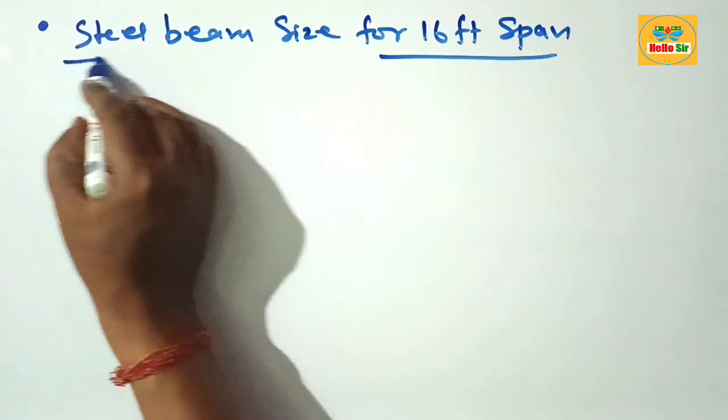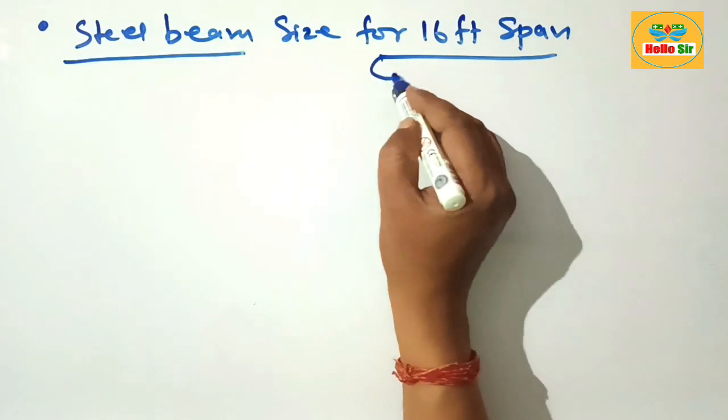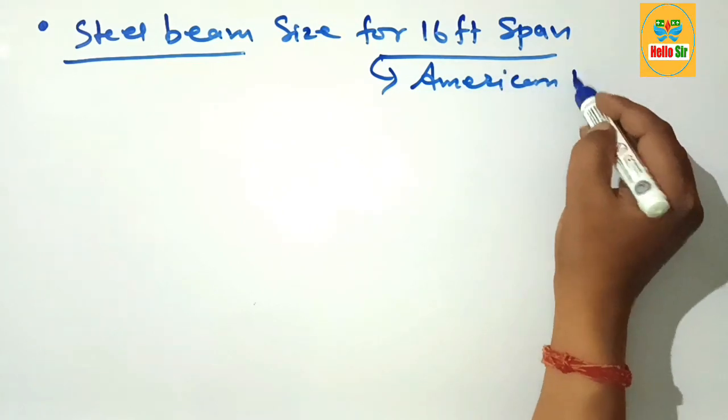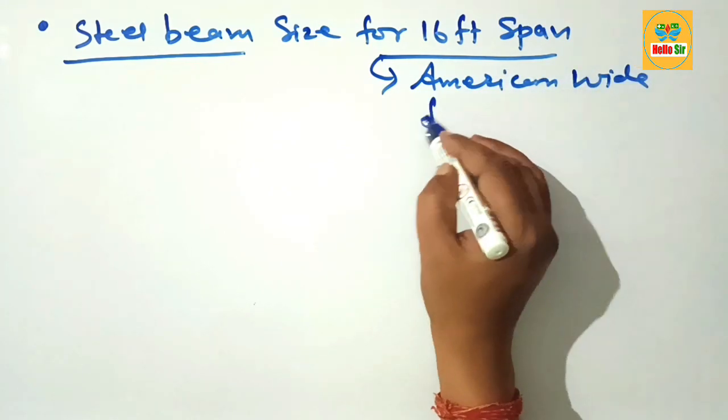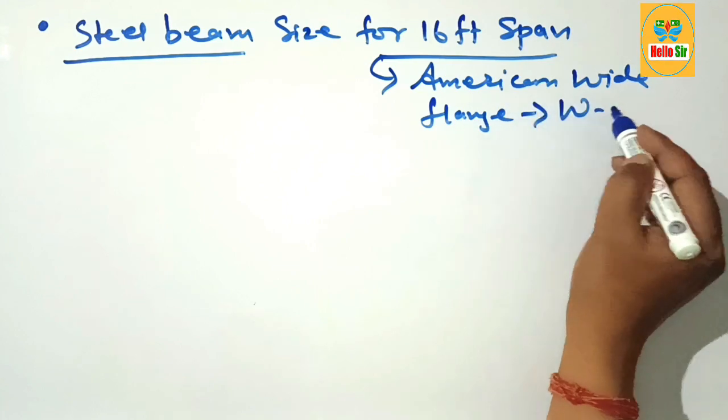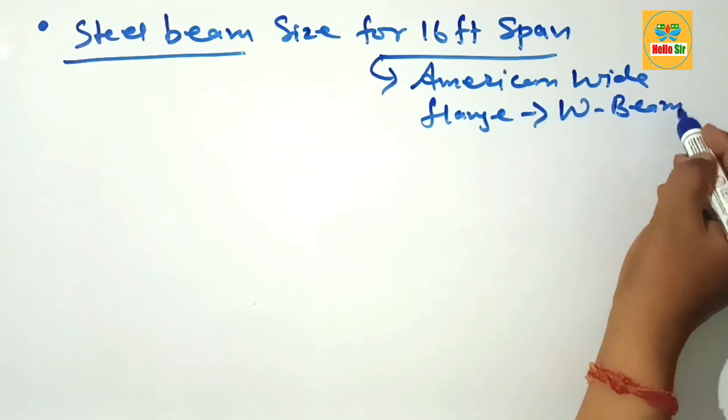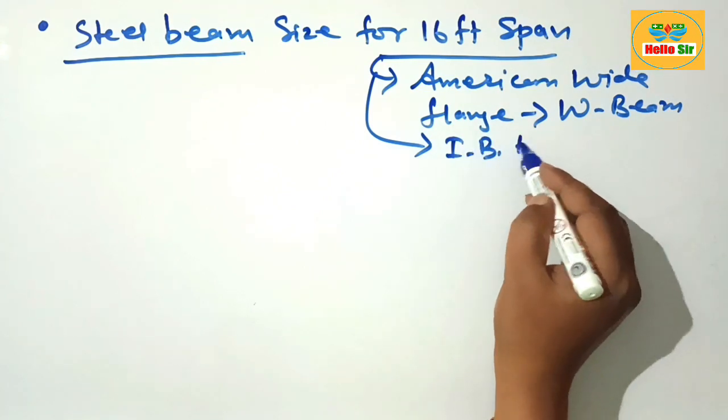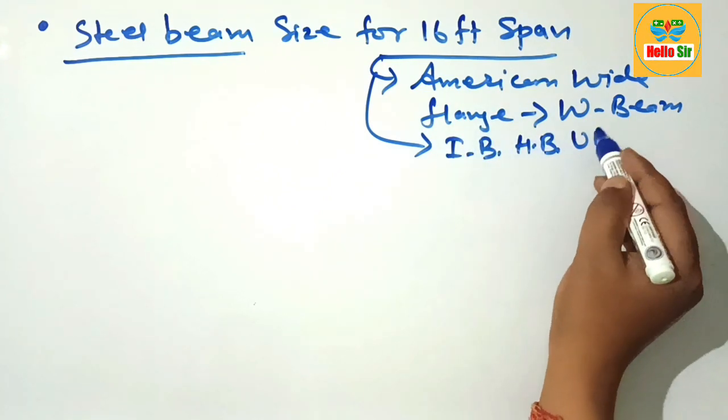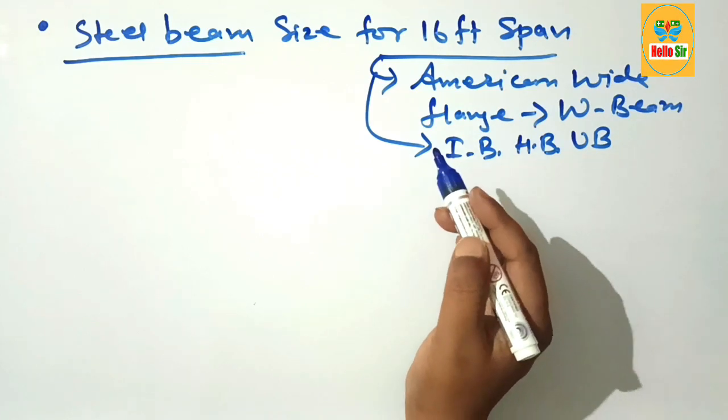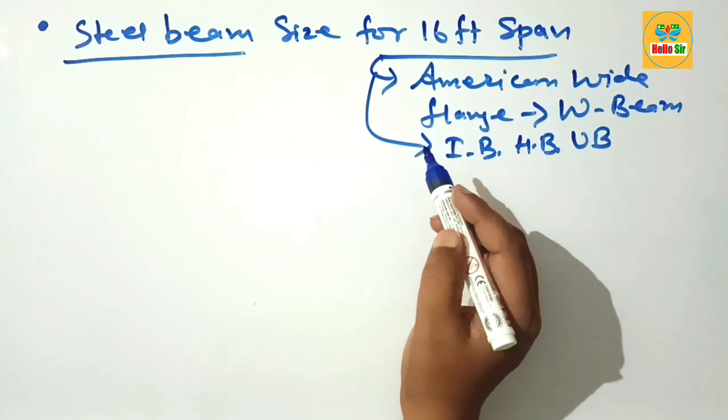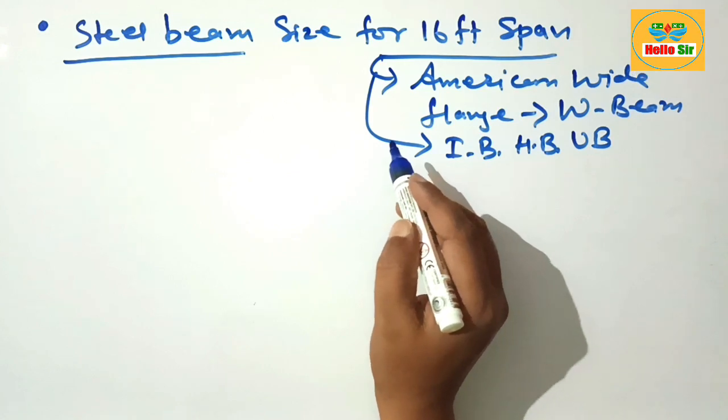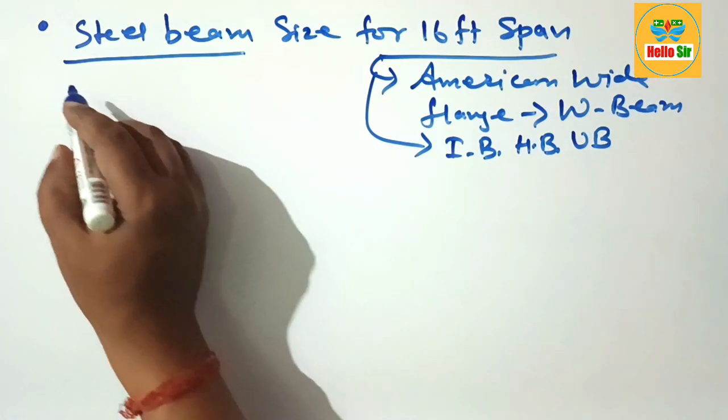Here the beam type is steel beam. You know that the American wide flange beam is denoted by W-beam and it is also known as I-beam, H-beam, and universal beam. It is used in steel industry for several civil construction work.